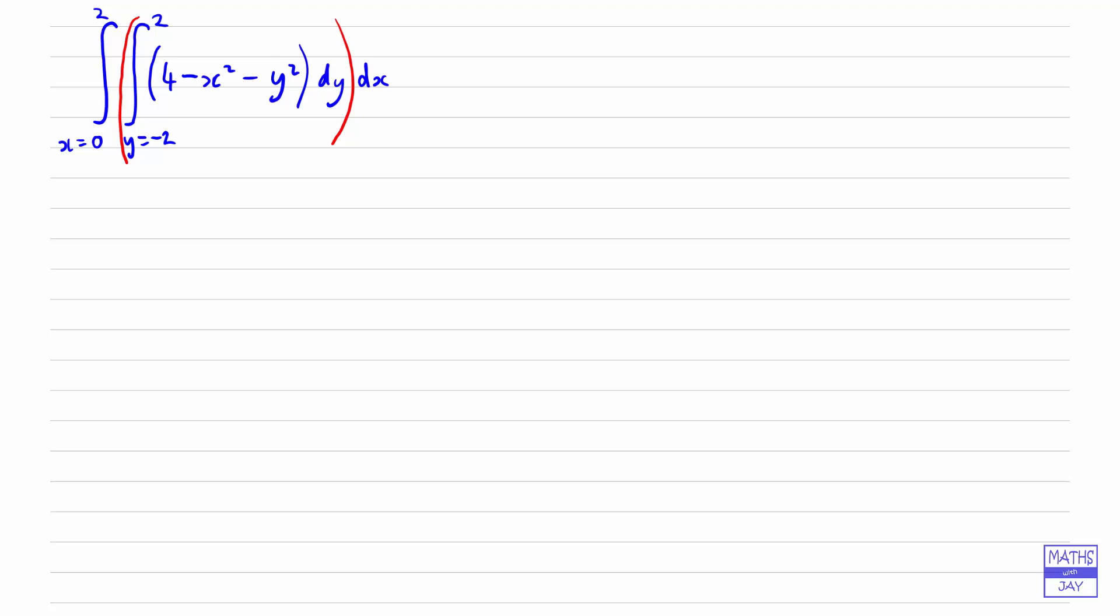So what we're really doing is doing partial integration. So we're thinking of x as being fixed and y as being the variable. So initially we're leaving the external integral, the x being between 0 and 2, and we're integrating the internal part.